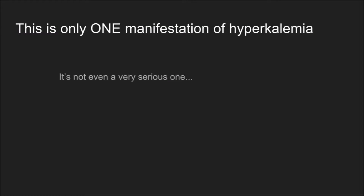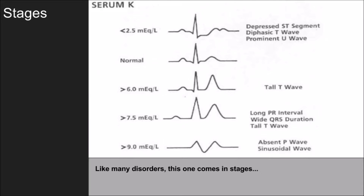Hyperkalemia comes in stages like many disorders. The normal manifestation of potassium in the bloodstream is nothing — it needs to be there in normal ranges, keeping our myocytes predominantly negative, somewhere around 70 millivolts, which allows the process of depolarization to happen. When we get above 6 milliequivalents, we begin to see that tall peaked T wave — that repolarization abnormality — because the electrolyte inside our cells is pulling things in a negative direction, disrupting homeostasis.